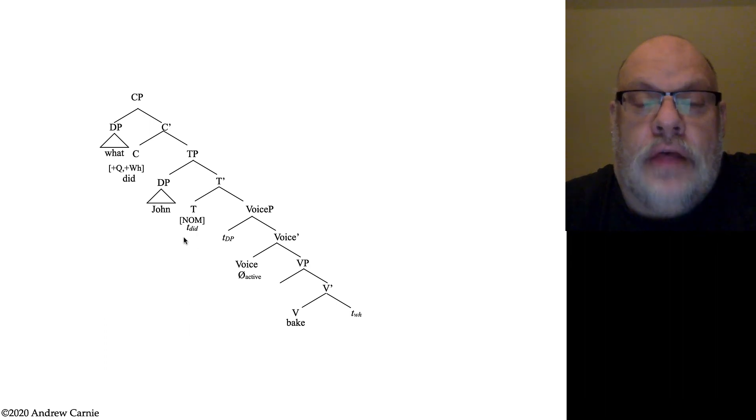This puts everything in the right order. We have a couple of null things. Like we have the trace of the did. And we have the traces of the voice phrase, of the subject and of the object. But this effectively gives us the correct order. And it makes sure that all of our particular constraints we've argued for are indeed met. This is a well formed S structure.